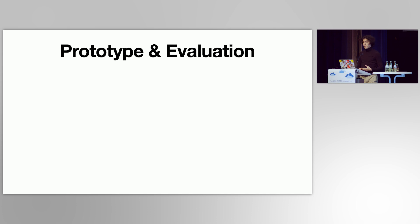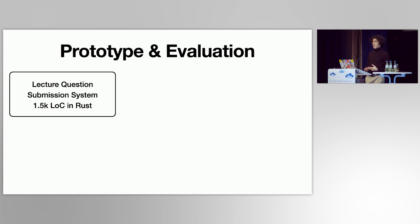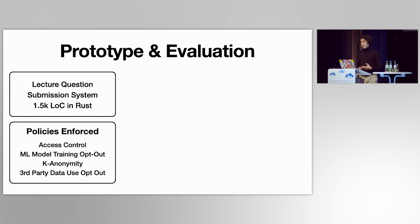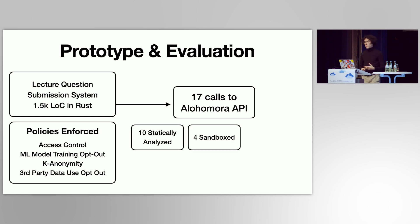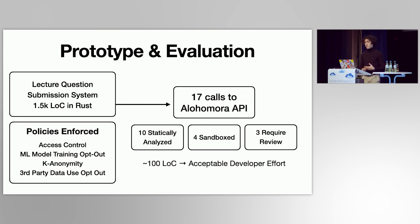We applied Alohomora to a lecture question submission system of 1,500 lines of code in Rust and were able to enforce privacy policies. We identified 17 calls to the Alohomora API, while everything else gets automatic guarantees due to Rust memory safety. Most of those regions could be enforced automatically, and only three actually require human review, resulting in approximately 100 lines of code for the developer to check, which we consider acceptable developer effort.